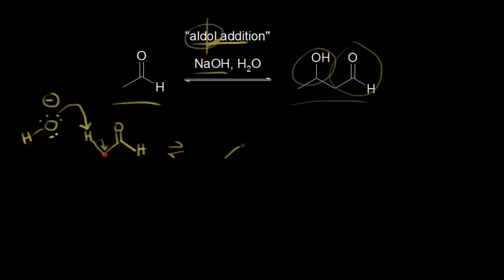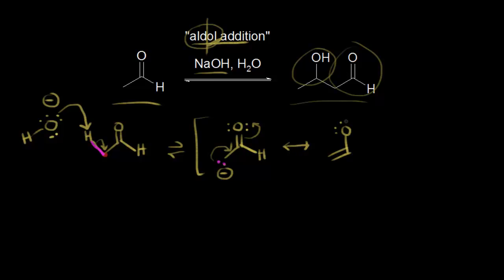Let's go ahead and show the carbanion that would result. We have our carbonyl, a hydrogen on the right side, and on the left side a lone pair of electrons on this carbon — so we have a carbanion. The electrons in magenta moved off onto this carbon. We can draw a resonance structure where these electrons move in, and the electrons go off onto our oxygen to form the oxyanion, giving a double bond and three lone pairs on oxygen with a negative one formal charge.